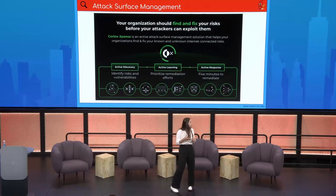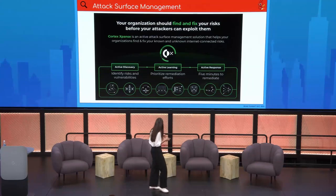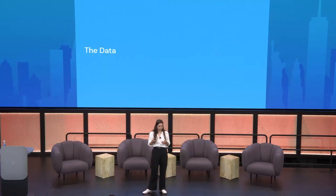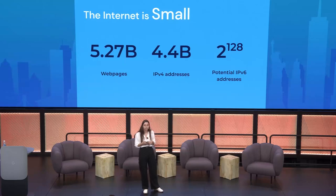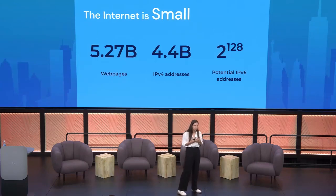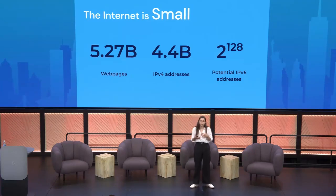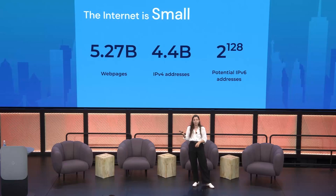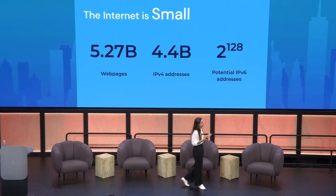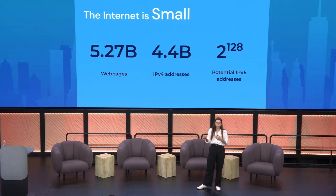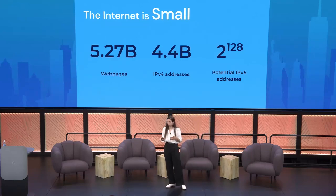The process we do to help is: we identify vulnerabilities, prioritize them because we might find a lot, and remediate the issue for our customer. We're all into data, so let's talk about the data we have. The internet might look big and IPv6 is changing the picture, but scanning technologies today make it pretty easy to scan the internet — attackers can do it within a few hours. We need a strong data infrastructure to support the data we're ingesting, and we don't want it to be our bottleneck.